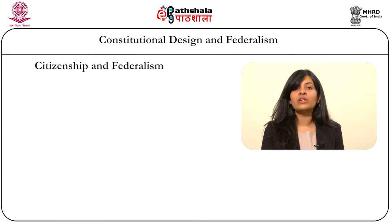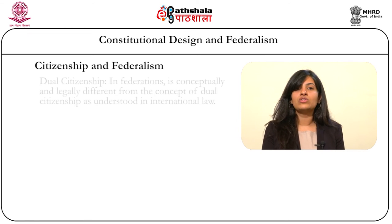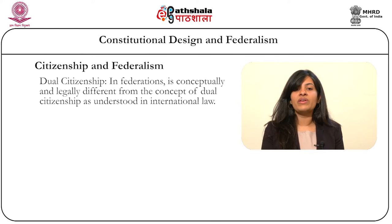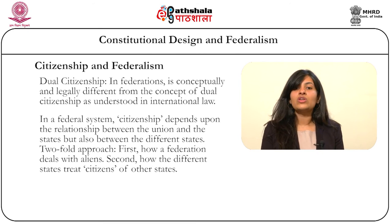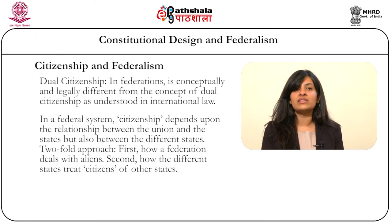Next, we come to the sub-part on citizenship and federalism. The question of citizenship is not a common topic of discussion when it comes to federalism studies. Dual citizenship, as understood in terms of a federal structure, where an individual is both the citizen of the common union as well as the regional governments, is conceptually and legally different from the concept of dual citizenship under international law. It also presupposes that the federation confers upon individuals citizen status with respect to the union as well as the constituent states. In a federal system, citizenship would depend upon the relationship between the union and the states but also between the different states. The question of citizenship can be dealt with by examining first, how a federation as a whole deals with aliens and secondly, how the different states treat citizens of other states.